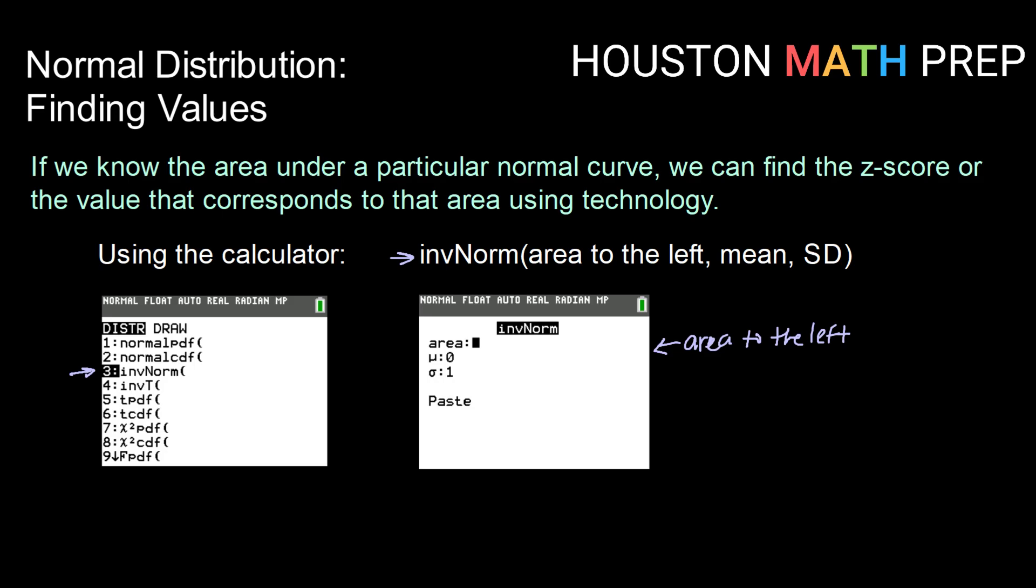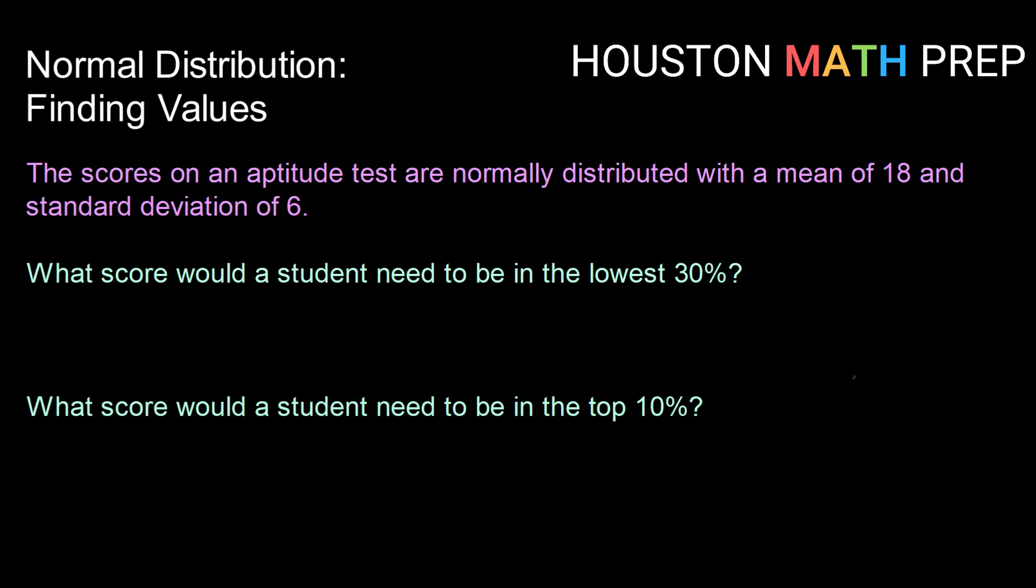So let's take a look at how that would work. Let's say we have scores on an aptitude test that are normally distributed. We have a mean of 18 and a standard deviation of 6.